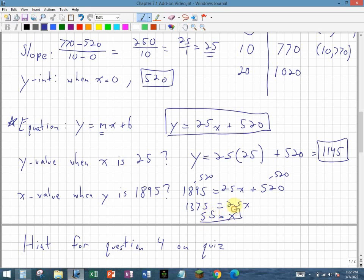So this tells me that when x is 55, or when I sell 55 items, then my value for y, my cost, or whatever it happens to be, will be 1895.